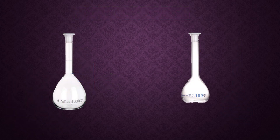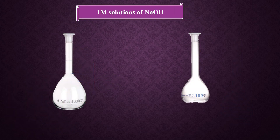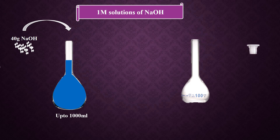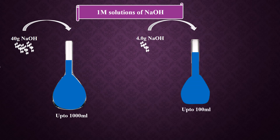You can see that for 1000 milliliters of 1 molar sodium hydroxide solution, you take 40 grams of sodium hydroxide and dilute to 1000 milliliters. But for 100 milliliters of 1 molar sodium hydroxide solution, you take only 4 grams, dissolve in water, and dilute to 100 milliliters. So if you need only 100 milliliters in an experiment, you just need 4 grams, and wastage of chemical is reduced.